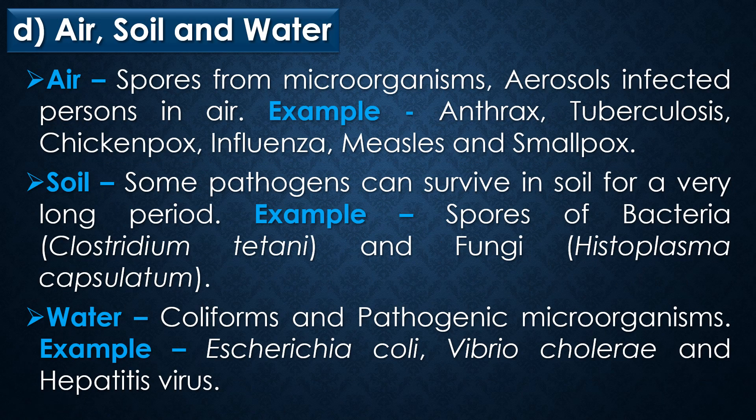The next sources of microbial infections are air, soil, and water. Spores from microorganisms and aerosols from infected persons in air can act as sources of airborne infection. An aerosol is a cloud of small droplets and solid particles suspended in air. Examples of airborne microbial infections include anthrax, tuberculosis, chickenpox, influenza, measles, and smallpox. Some pathogens survive in soil for very long periods; examples include Clostridium tetani spores and Histoplasma capsulatum. Water may act as a source of infection due to coliforms and pathogenic microorganisms; examples include Escherichia coli, Vibrio cholerae, and hepatitis virus.